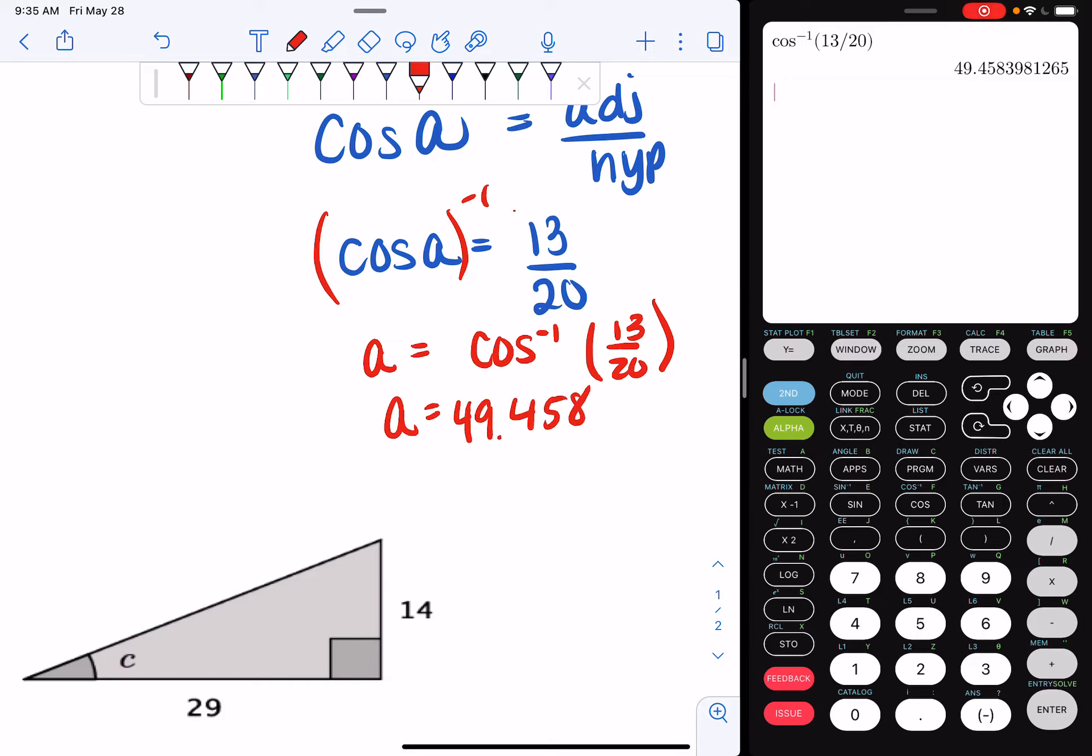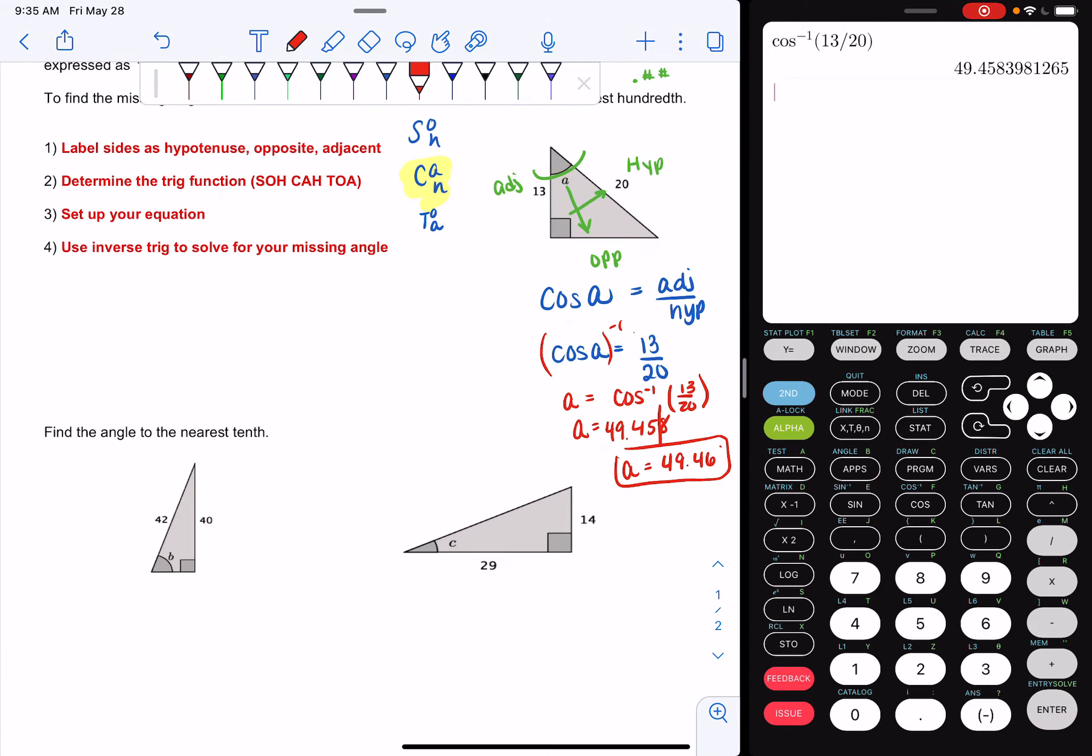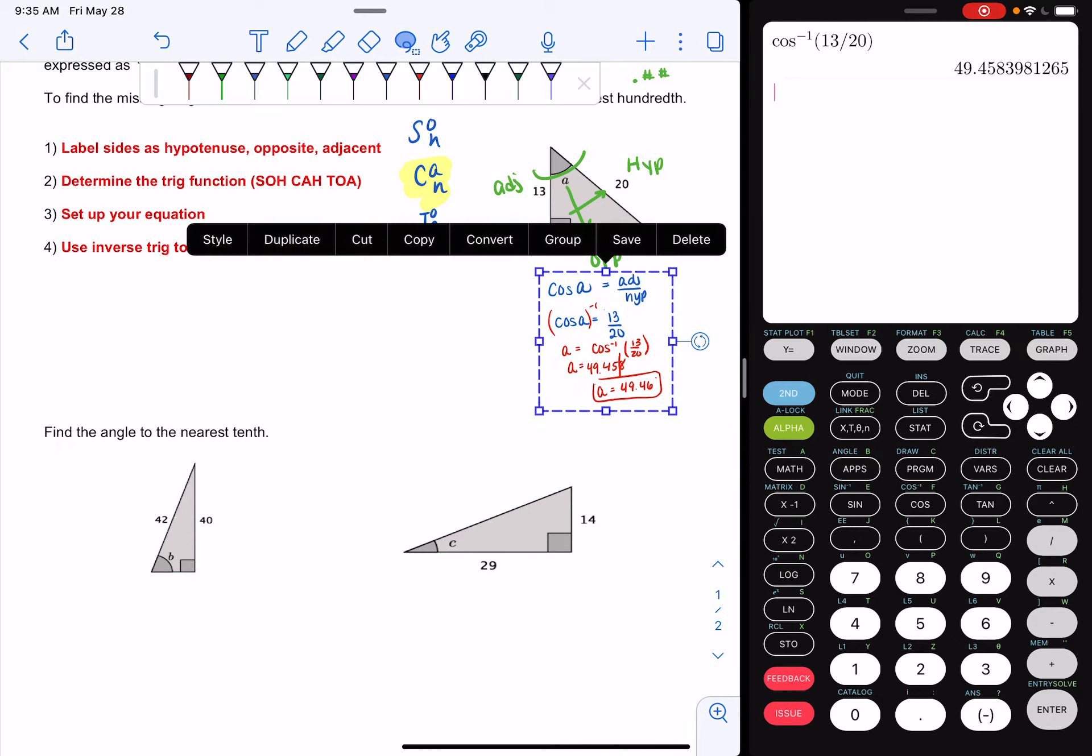Remember, I said I wanted to round to the nearest hundredth. Look to the right. That eight's bigger than a five, so my five is going to be a six. So I can say A is 49.46 degrees. And that's my final answer. And that's how you use inverse trig to solve for a missing angle.